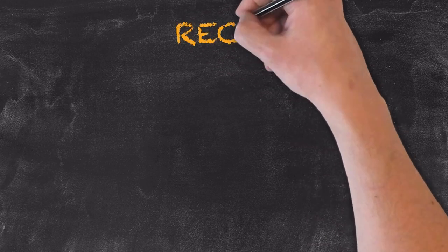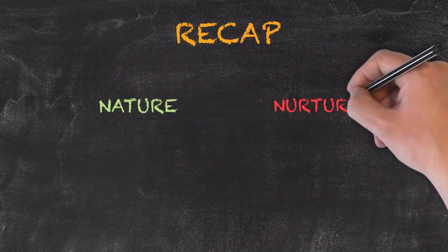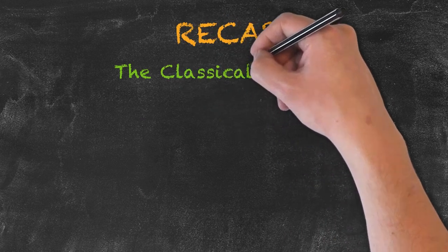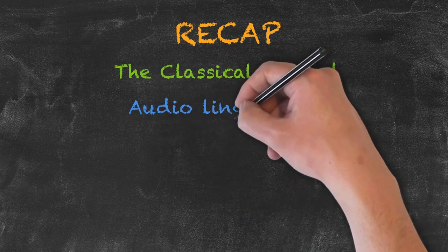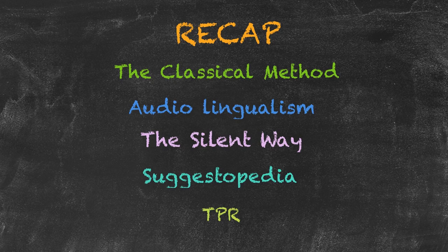Before moving on to the final methodology, let's recap. We've been looking at different learning methodologies, each taking its premise from somewhere on the spectrum of nature versus nurture. That position on the spectrum gives us the background or theory for that methodology. Starting in the 17th century with the classical method, and moving on as psychology developed through audio-lingualism, the silent way, suggestopedia, and TPR — each shows a development as knowledge about learning increased, and each takes a different starting point on our initial spectrum.